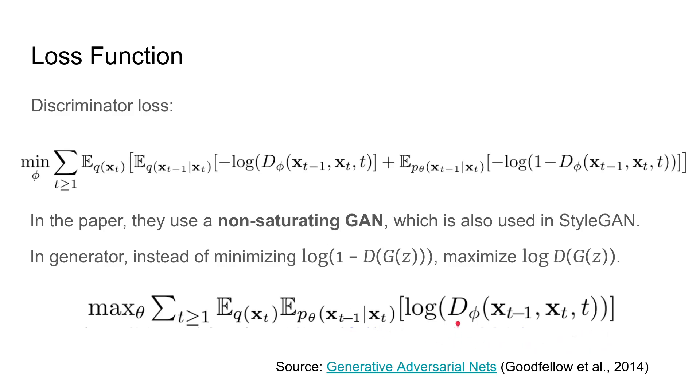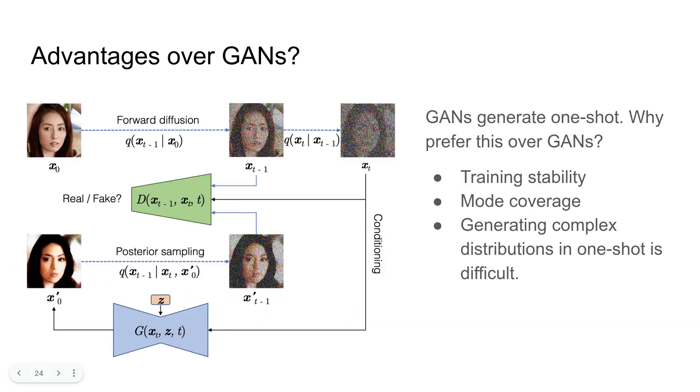All in all, we ended up with a framework that integrates GAN into the diffusion process. But what is the advantage of this over the regular GAN? Because GANs can generate samples in one shot. Why should we prefer this over GANs?